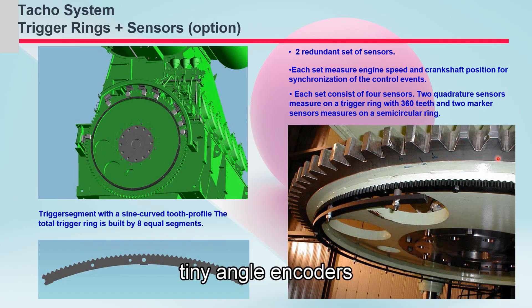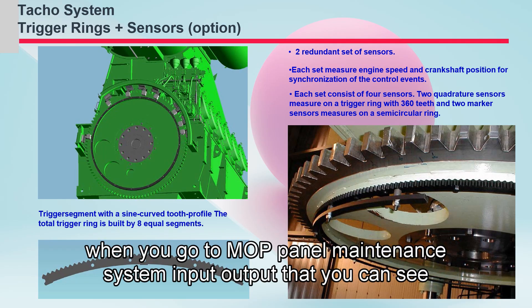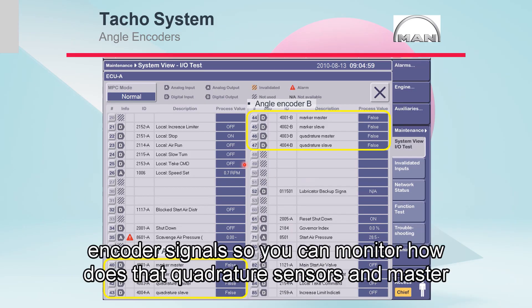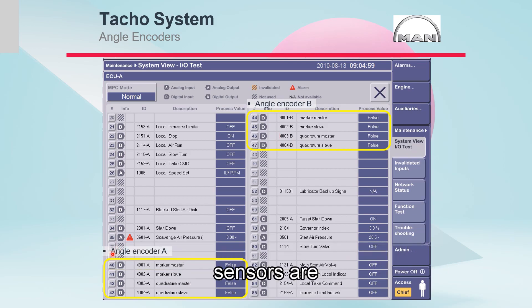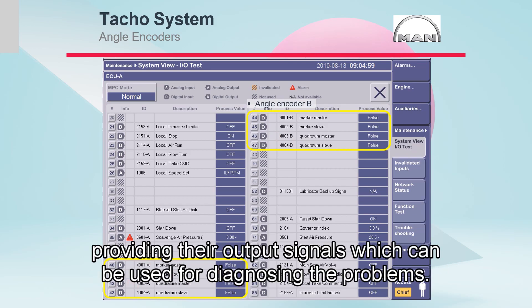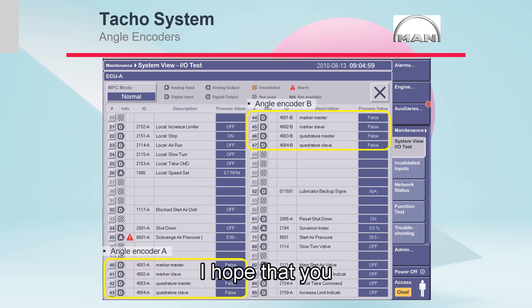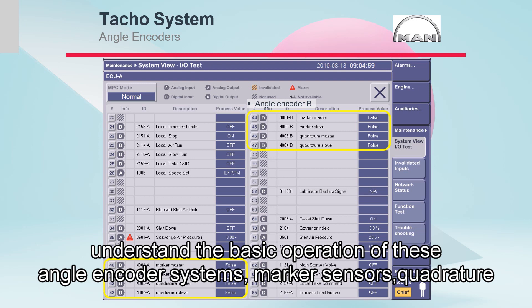When you go to the multi-panel maintenance system input-output, you can see encoder B and encoder A signals. So you can actually monitor how the quadrature sensors and master sensors are providing their output signals, which can be used for diagnosing the problems.